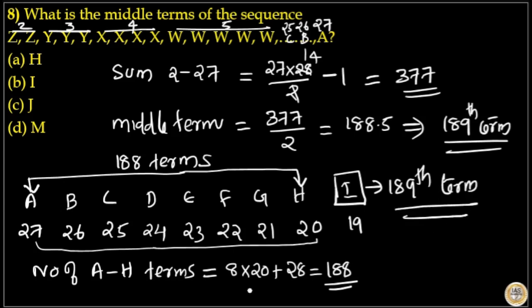From A to H we have total 188 terms. That is 20 plus 21 plus 22 plus 23 plus 24 plus 25 plus 26 plus 27 equals 188. 20 into 8 is 160. Then 1 to 7 sum is 7 into 8 by 2, that is 28. So total 188 terms from A to H. That is I is the 189th term.